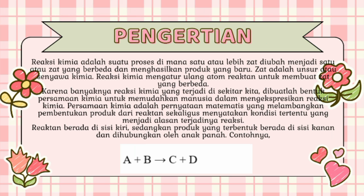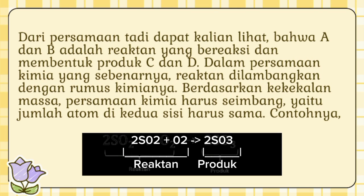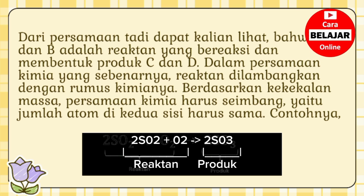Persamaan kimia adalah pernyataan matematis yang melambangkan pembentukan produk dari reaktan sekaligus menyatakan kondisi tertentu yang menjadi alasan terjadinya reaksi. Reaktan berada di sisi kiri, sedangkan produk yang terbentuk berada di sisi kanan dan dihubungkan oleh anak panah. Dari persamaan tadi dapat kalian lihat bahwa A dan B adalah reaktan yang bereaksi dan membentuk produk C dan D. Dalam persamaan kimia yang sebenarnya, reaktan dilambangkan dengan rumus kimianya.